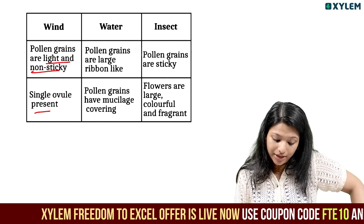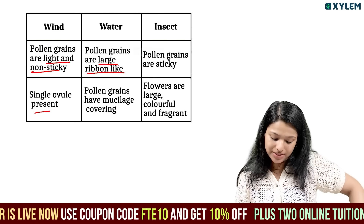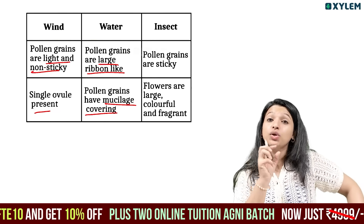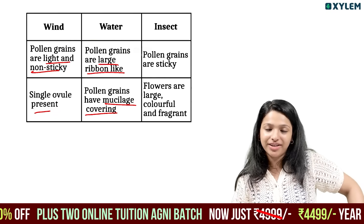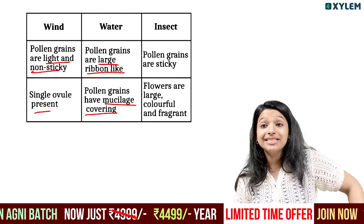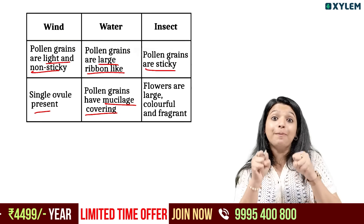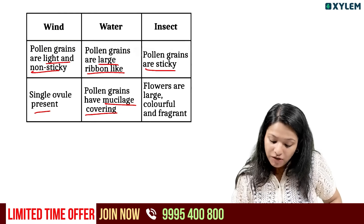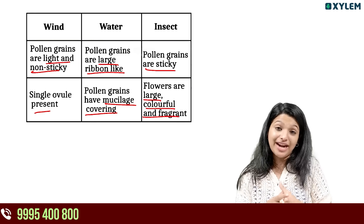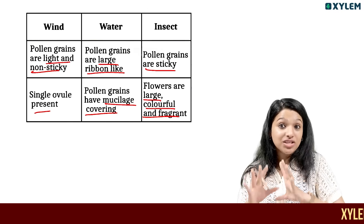For water-pollinated flowers, the pollen grains are large and ribbon-like with a mucilaginous covering, which is lightweight. Insect-pollinated flowers have sticky pollen grains. The flowers are large, colorful, and fragrant — very colorful and aromatic. These are the clear features of insect-pollinated flowers.